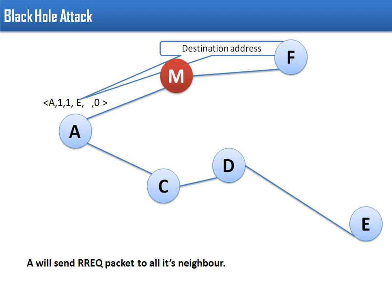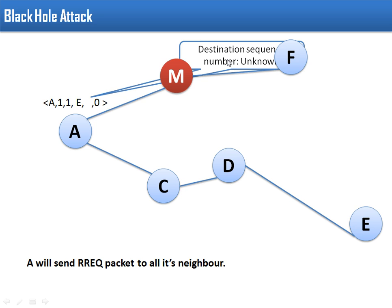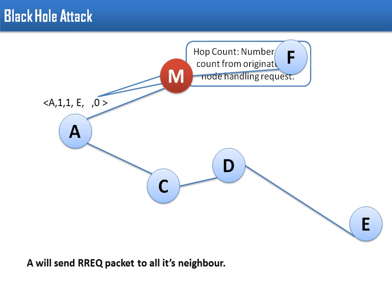The fourth one is your destination address. So whenever this packet is received by any other node, those nodes would also know that node A wants to search a path to node E. The fifth field is the destination sequence number. Initially A is not having any information about E, so this field is left empty. And the last one is the hop count.